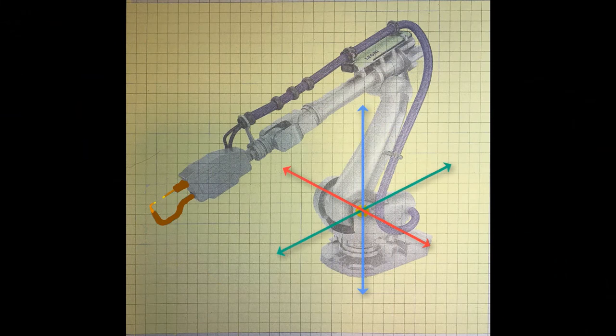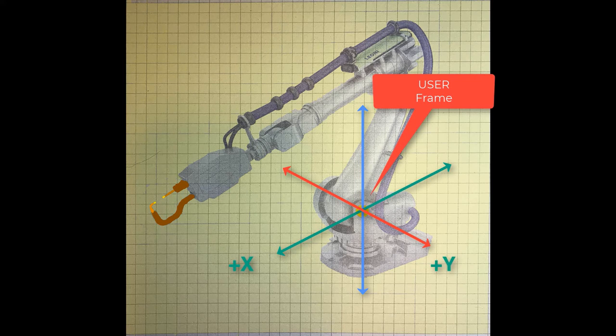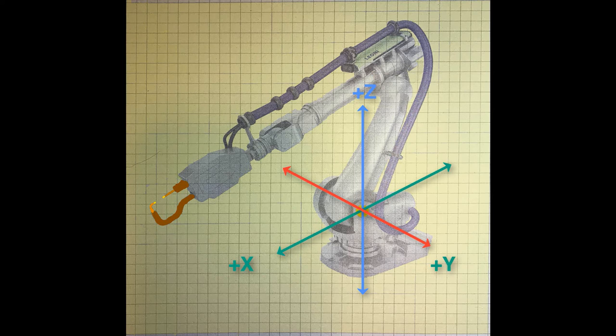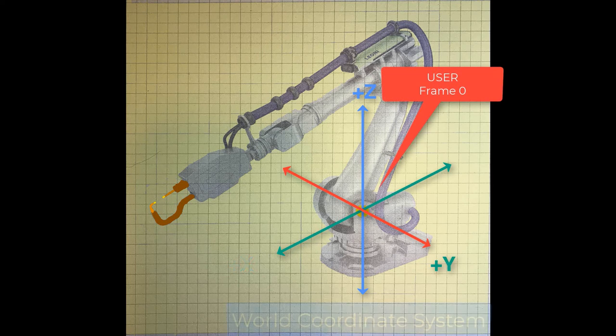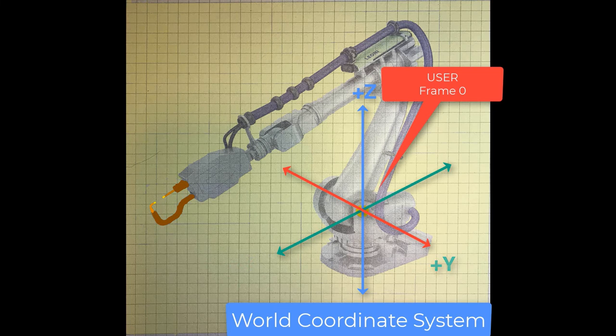A FANUC robot is shipped with two types of frames programmed into it, user frames and tool frames. The shipped user frame has its origin fixed at the center of the base of the robot, at the height of joint motor two. This system is called user frame zero, and is also referred to as the world coordinate system.